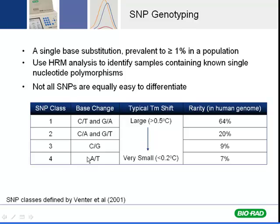For HRM, the top two classes result in a very large temperature shift, so you can easily delineate between CT and CA mutations. The AT mutations require a very, very small temperature shift, so these are more difficult. But if you design your experiment well and use the right types of amplicons for HRM, you can easily determine and delineate the allelic variants for AT SNPs as well.